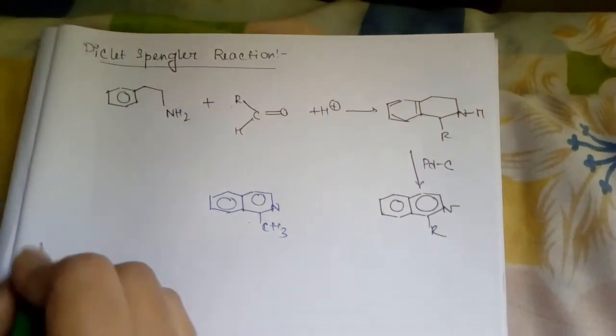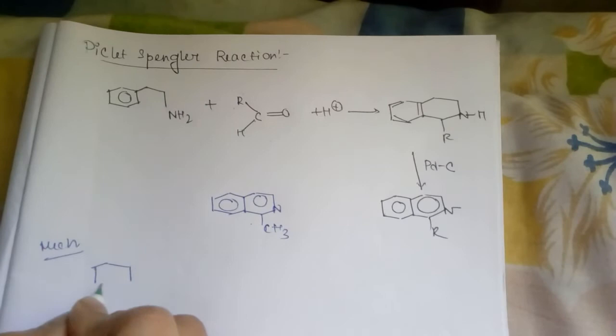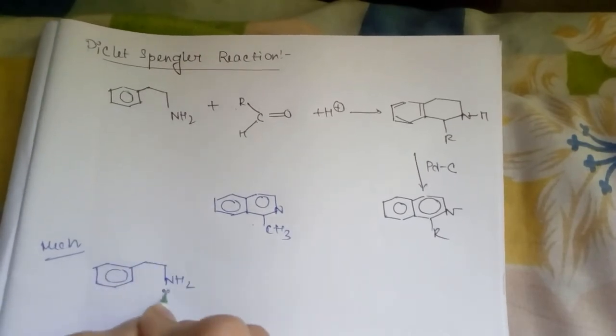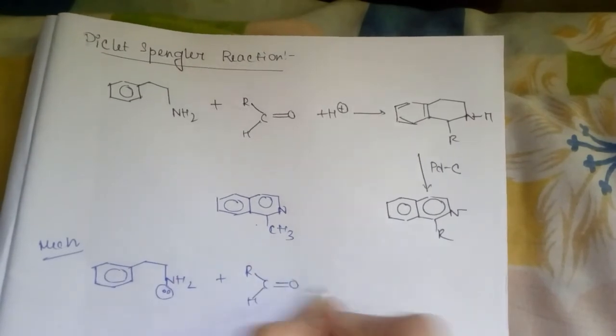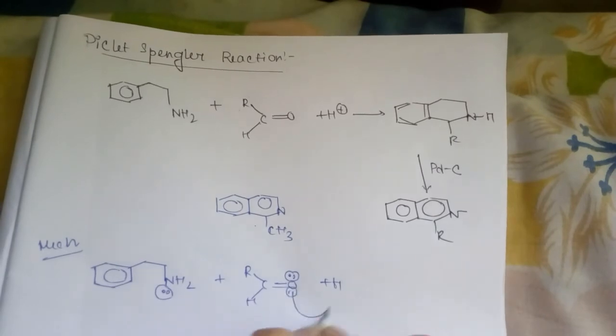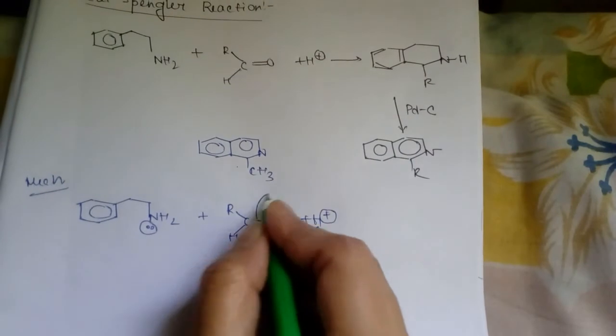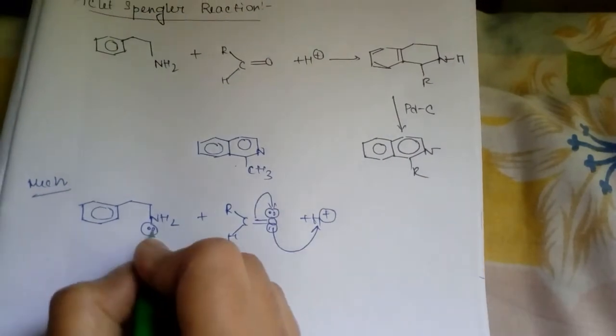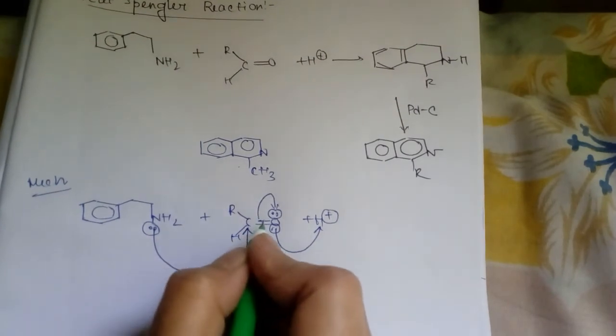The mechanism is: at first beta phenyl ethylamine will react with this aldehyde. This oxygen will take up this H plus, then a positive charge will generate upon oxygen and this bond will rotate. A positive charge now generates upon carbon and this will be neutralized by the lone pair of nitrogen of beta phenyl ethylamine.